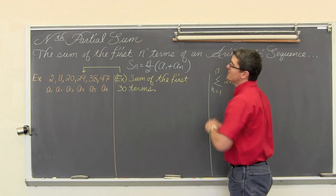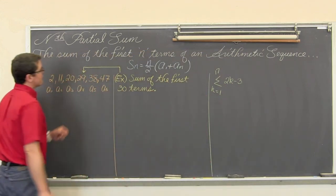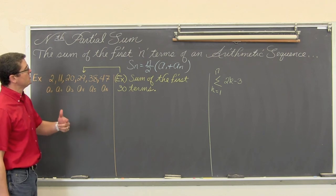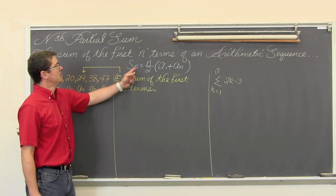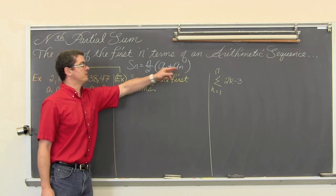We are going to do that by talking about the nth partial sum. The sum of the first n terms of an arithmetic sequence is found with the formula S sub n equals n divided by 2 times a sub 1 plus a sub n.